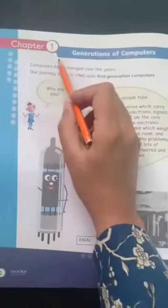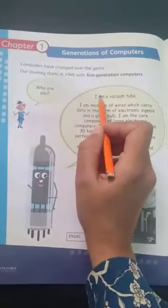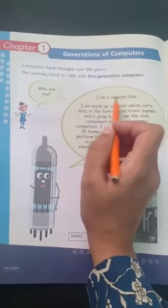Students, today we will study Chapter 1: Generations of Computers. In this chapter, we will talk about five generations of computers with the technologies used in them.